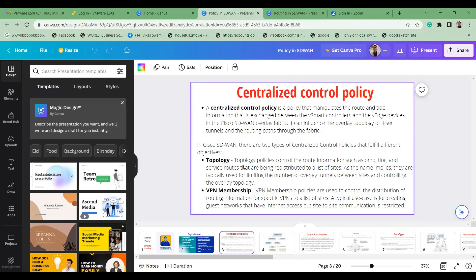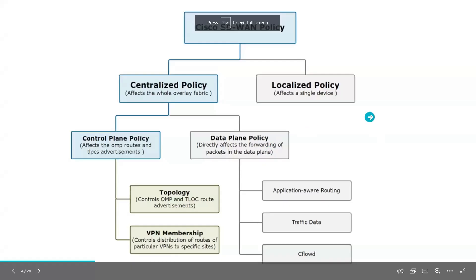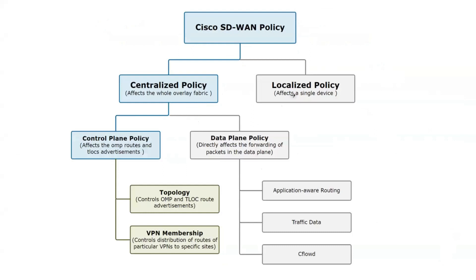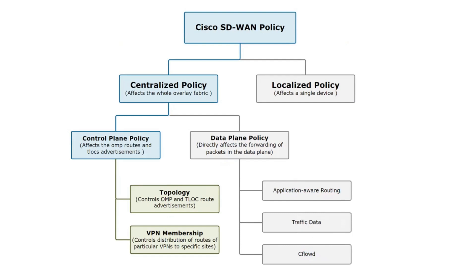Last time we saw there is a centralized policy and there is a localized policy. In Cisco SD-WAN, there are centralized policies and localized policies. Our major focus is going to be centralized policies. Localized policies are what we've been doing on Cisco IPsec VPN for a very long time, and they're not very exciting. The most exciting thing is centralized policies and how they work.